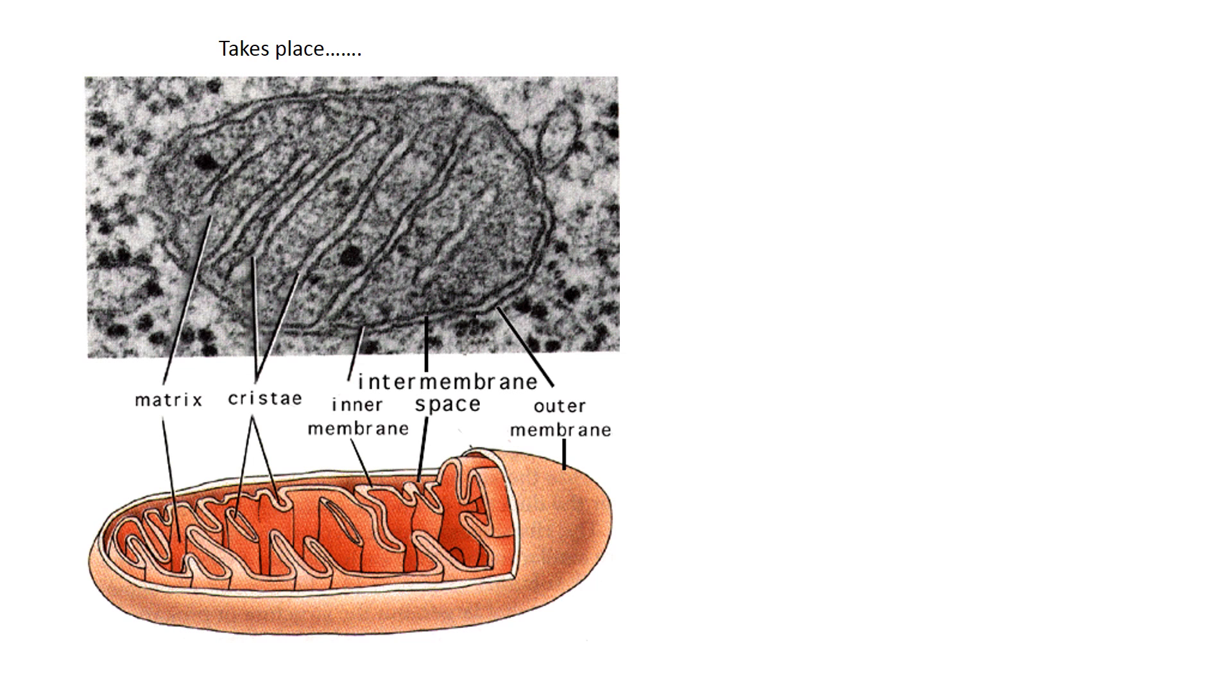This takes place on the inner membrane of the mitochondria and it deals with the inter membrane space and the matrix. So this is the inner membrane of the mitochondria separating the matrix and the inter membrane space.